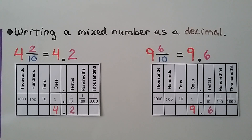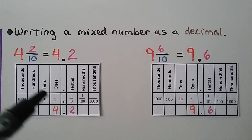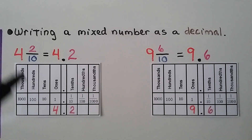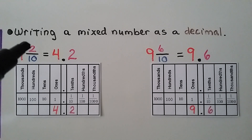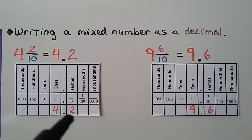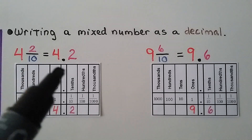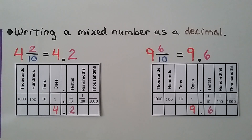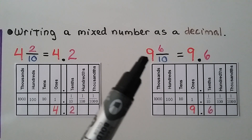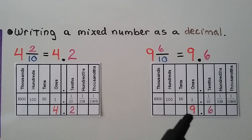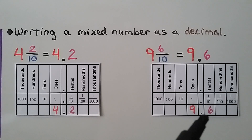For writing a mixed number as a decimal: the whole number four goes in the ones place, and our two-tenths gets a two in the tenths place — giving us four and two-tenths, or 4.2. For nine and six-tenths, we write a nine in the ones place and a six in the tenths place: 9.6.